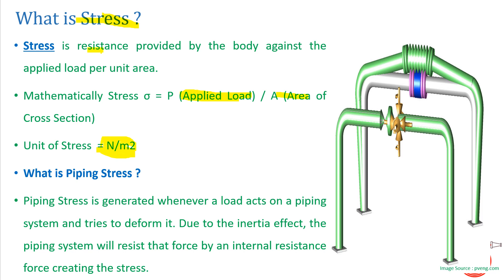The unit of stress is Newton per meter square. This stress occurs in different ways due to different loads in our piping system and sometimes destroys the whole piping network. Piping stress is generated when a load acts on a pipe and tries to deform it. For example, if the pipe is fixed from both ends and internal pressure acts on it, the pipe body provides some resistance.